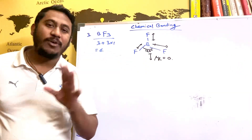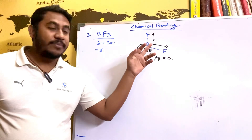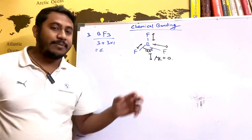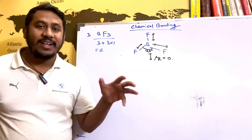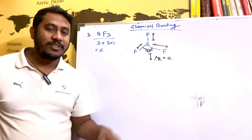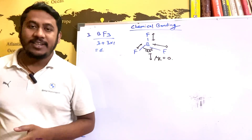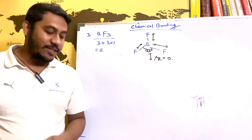Not only does each individual B-F bond have a dipole moment, but in BF3, all three bond dipoles cancel out due to the symmetric trigonal planar geometry. Therefore, mu resultant equals zero, and the overall dipole moment of BF3 is zero.